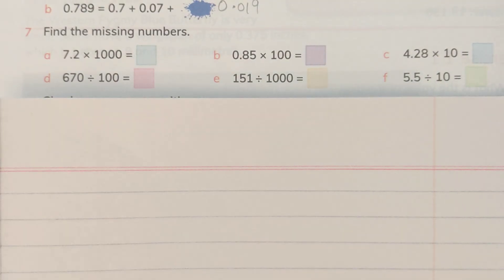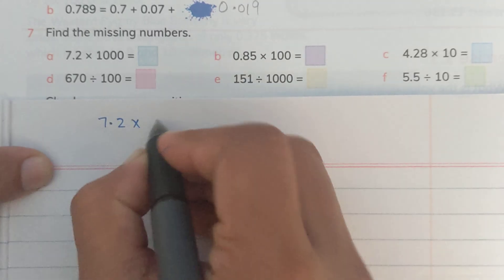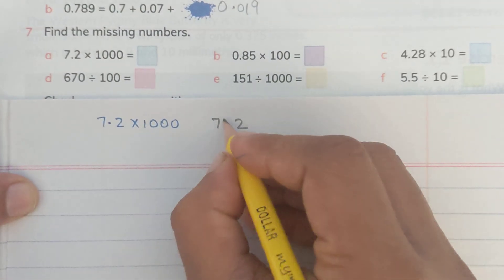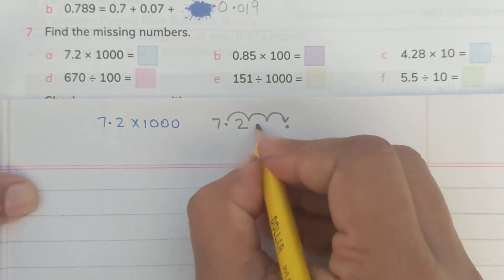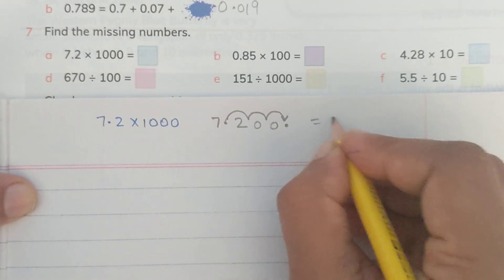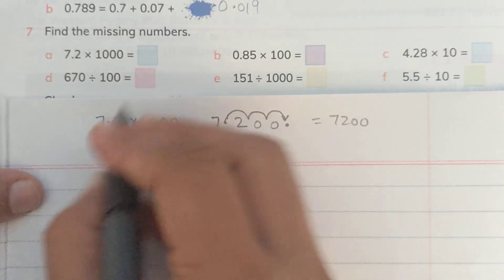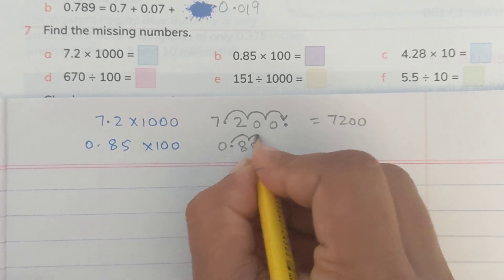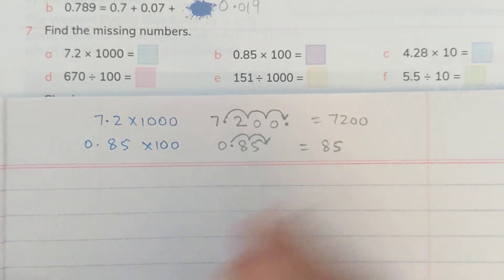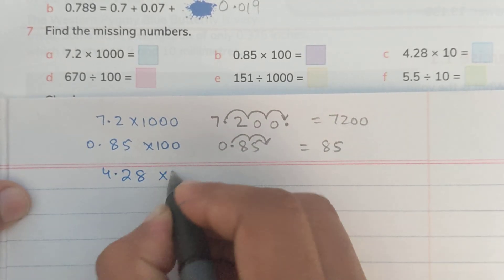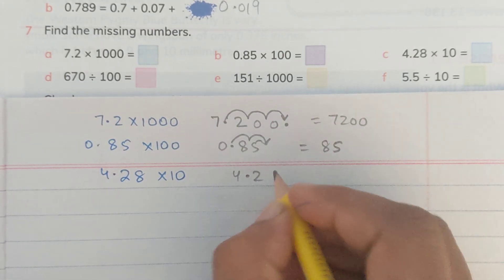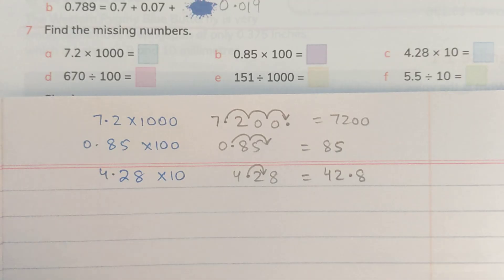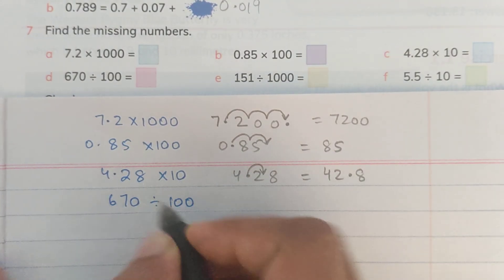Question 7: 7.2 multiplied by 1000 — the decimal moves three places forward. We need to add two zeros, giving 7200. Part b: 0.85 multiplied by 100 — two places forward — gives 85. Part c: 4.28 multiplied by 10 — one place forward — the decimal moves between 2 and 8, giving 42.8.